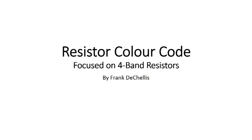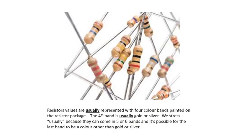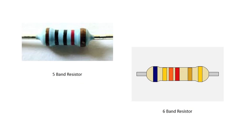We're going to talk about resistor color codes for four band resistors. Resistors usually come with four colors on them. There are resistors that have five and six colored stripes on them, but this video will only deal with four band resistors.